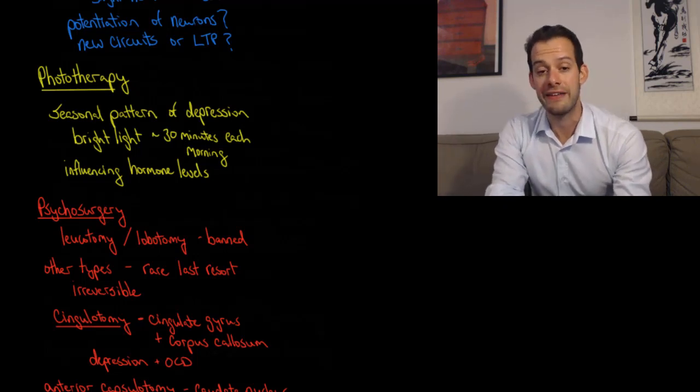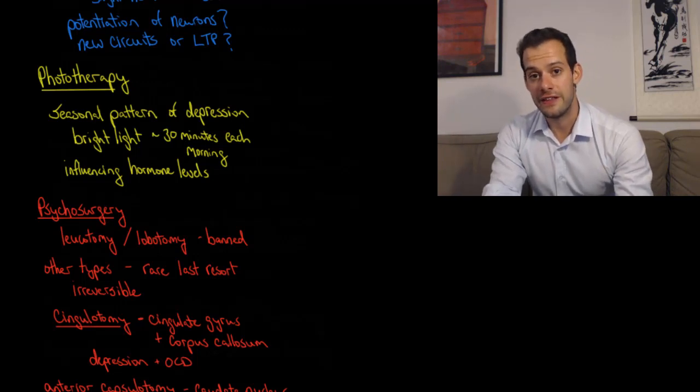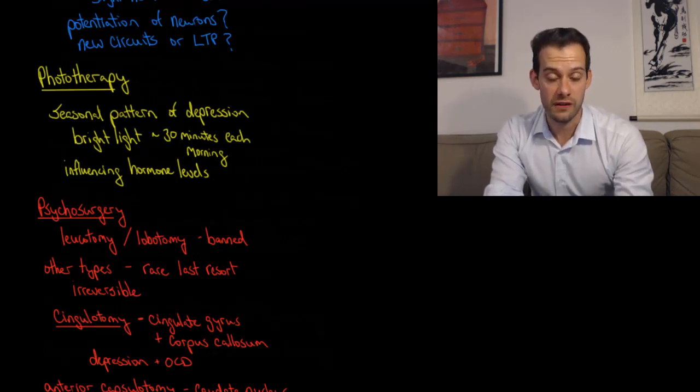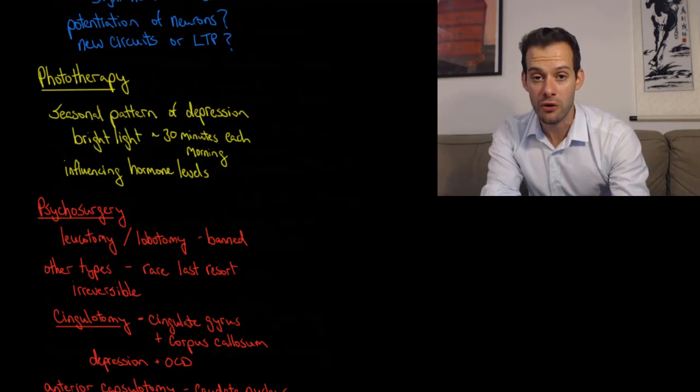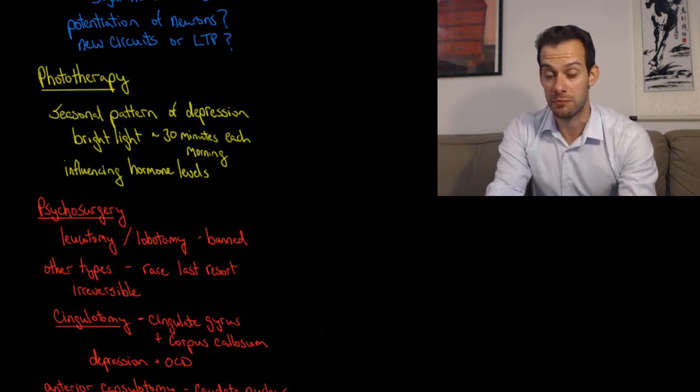This seasonal pattern is where people experience depressive episodes but only in the fall and the winter, and they don't experience them in the spring and summer. The idea is that this is occurring because of reduced levels of sunlight, and that this is influencing hormone levels in the body. Then those changes in hormone levels are affecting the person's mood and making them more likely to experience a depressive episode.